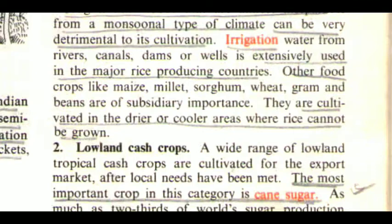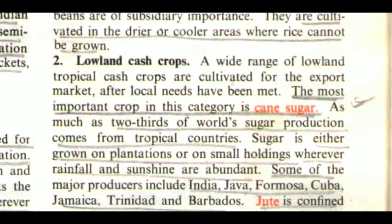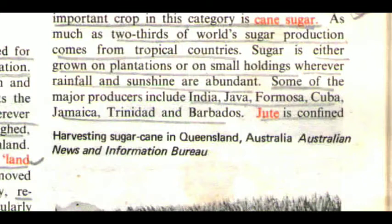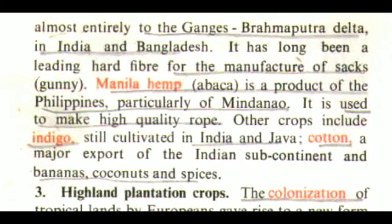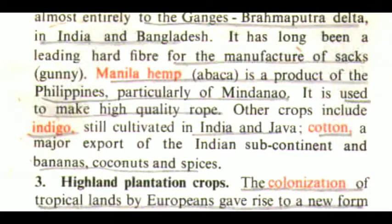The second type is lowland cash crops. A wide range of lowland tropical cash crops are cultivated for the export market after local needs have been met. The most important crop in this category is cane sugar. As much as two-thirds of the world's sugar production comes from tropical countries. Sugar is grown on plantations or small holdings wherever rainfall and sunshine are abundant. Some major producers include India, Java, Formosa, Cuba, Jamaica, Trinidad, and Barbados. Jute is confined almost entirely to the Ganges-Brahmaputra Delta in India and Bangladesh. Manila hemp (Abaca) is a product of the Philippines, particularly Mindanao, used to make high-quality rope. Other crops include indigo, cotton — a major export of the Indian subcontinent — and bananas, coconuts, and spices.